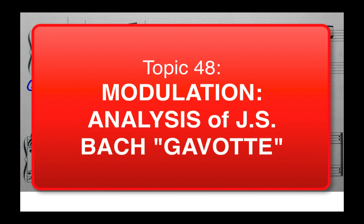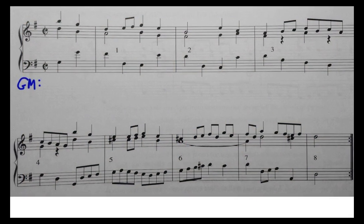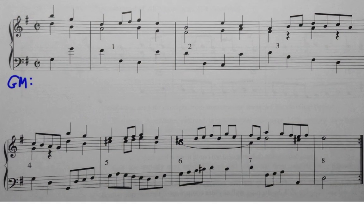In this video, we're going to work through the first eight measures of Bach's Gavotte from French Suite No. 5. It begins in one key and ends in another key, and it's a great demonstration of simple modulation using a pivot chord.